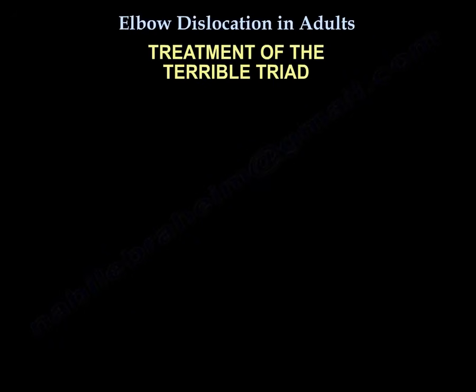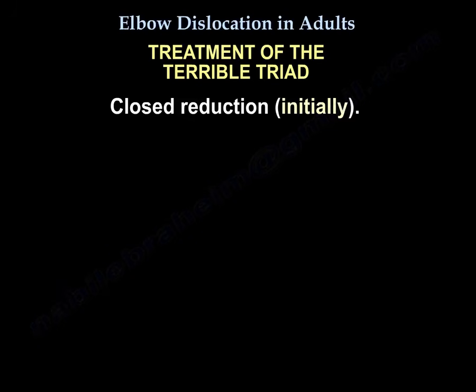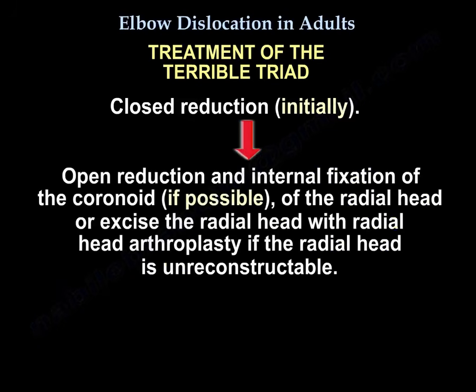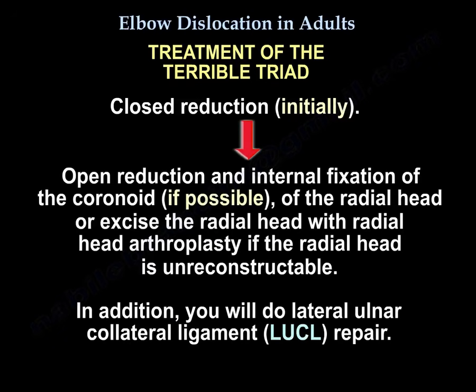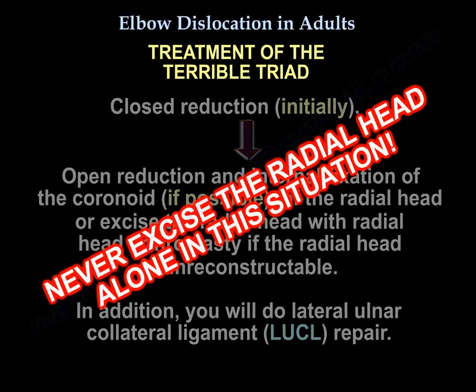For the terrible triad, treat with closed reduction initially, then open reduction and internal fixation of the coronoid if possible, fixation of the radial head, or radial head arthroplasty if the radial head is unreconstructable. In addition, perform lateral ulnar collateral ligament repair. Never excise the radial head alone in this situation.